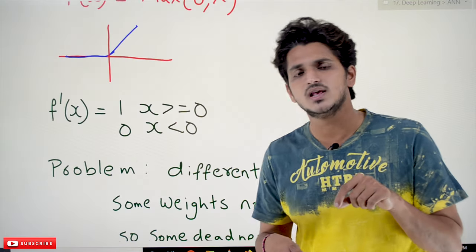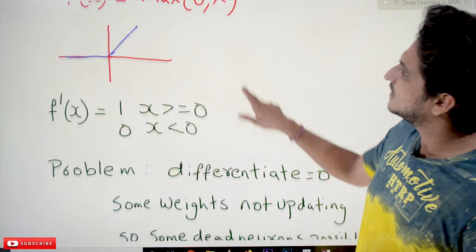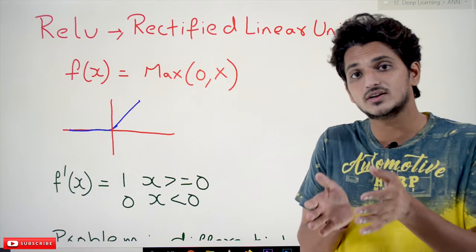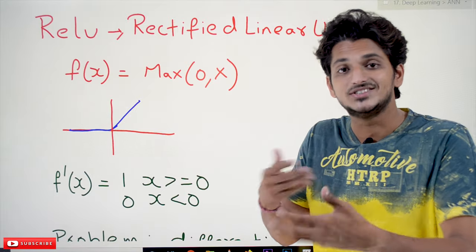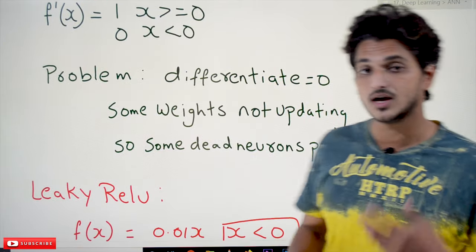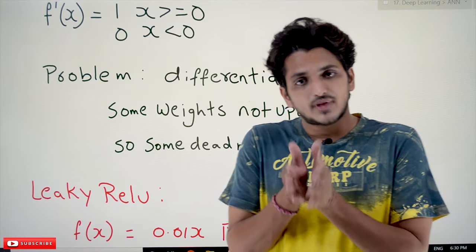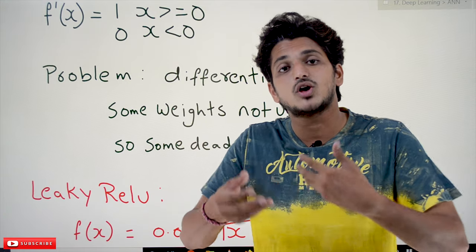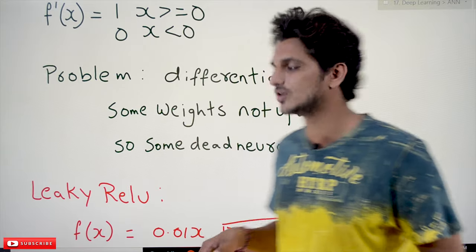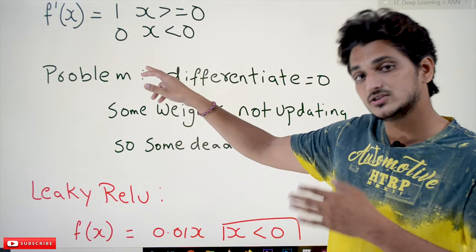But by using the ReLU activation function, sometimes you may get the problem of dead neurons. What is a dead neuron? If you take the x value on the negative side, the value we consider is 0, meaning that neuron is not activated — it is a dead neuron, and the differentiation of that neuron is 0. When we discuss how to train a multi-layered neural network, we clearly explain that if the differentiation value is 0, the weights are not updating. That is why we get the dead neuron problem — the neuron is not activated and weights are not updating.